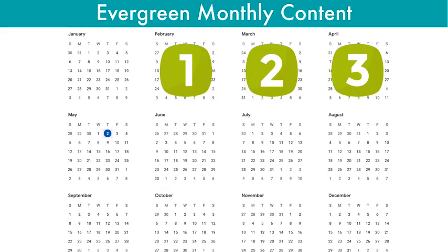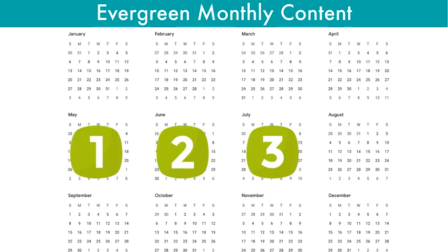Let's take a look at how the evergreen monthly content model works. Let's say a client signs up in February — they will receive the content for month one of your membership. Everyone who signs up gets the same content in their first month. The second month in March they get month two's content, and the third in April. If a different client signs up in May, they get the same content the February client got in month one, but in May. Everything starts based on each individual client's signup date — that is the evergreen monthly content model.